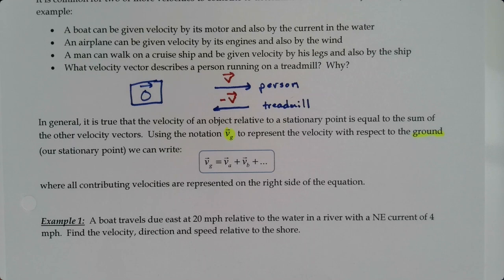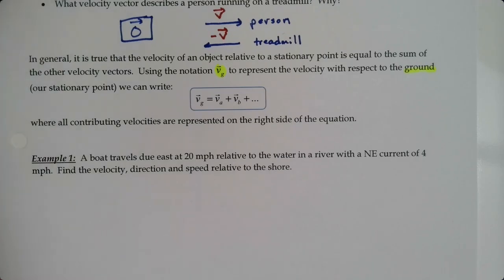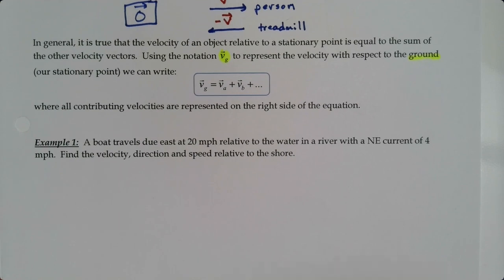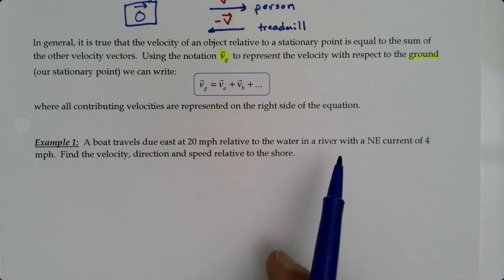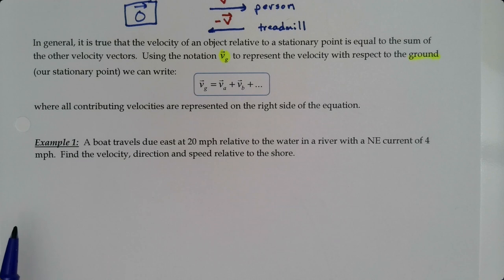Let's see an example. We have a boat that's traveling due east at 20 miles per hour relative to the water in a river with a northeast current of 4 miles per hour. We're going to find the velocity, direction, and speed.